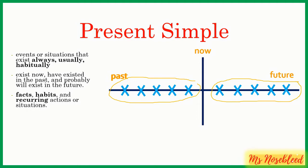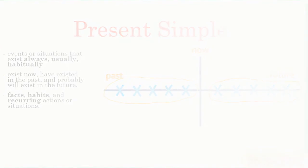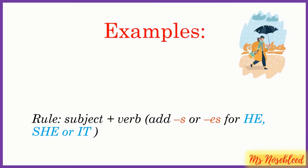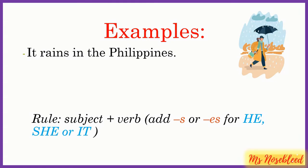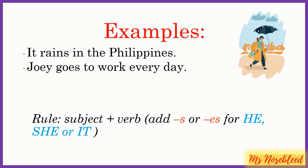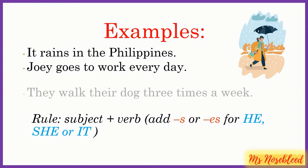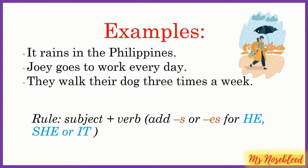Let's look at different sentences that show present simple. Here are some examples. It rains in the Philippines — it regularly rains. Joey goes to work every day — that's an everyday thing he does, so we use the present simple. And then, they walk their dog three times a week — it's a regular thing that they do, so you also use the present simple.